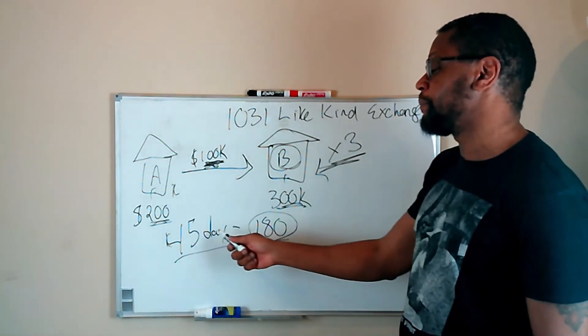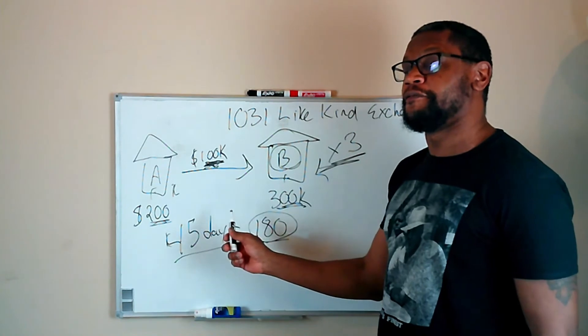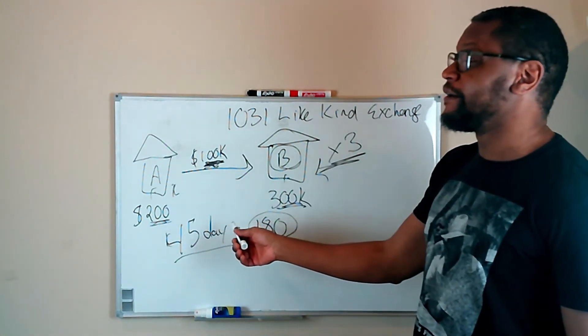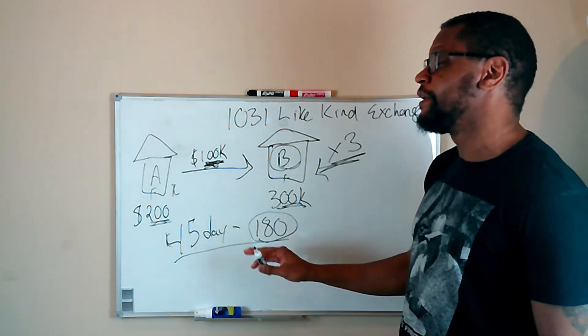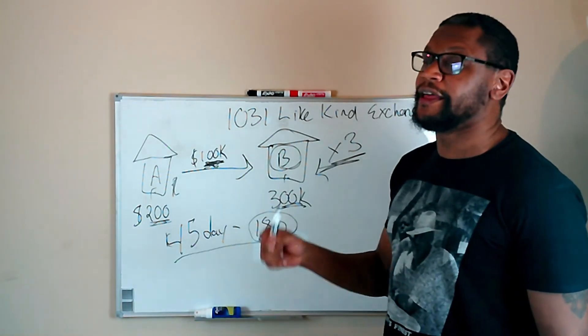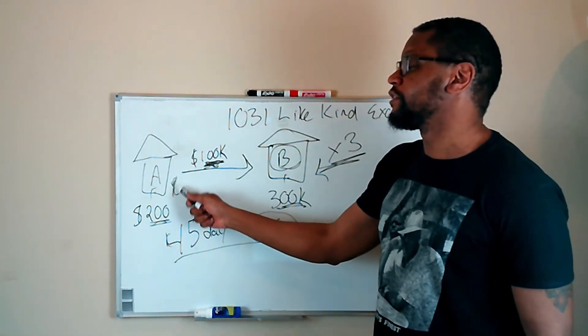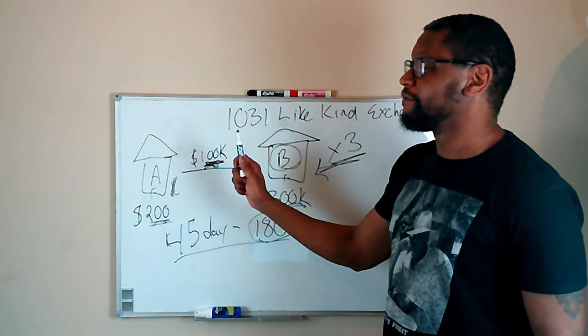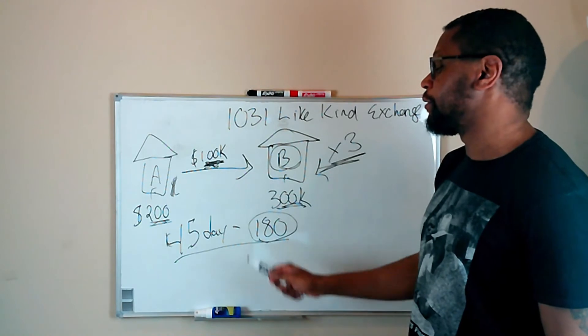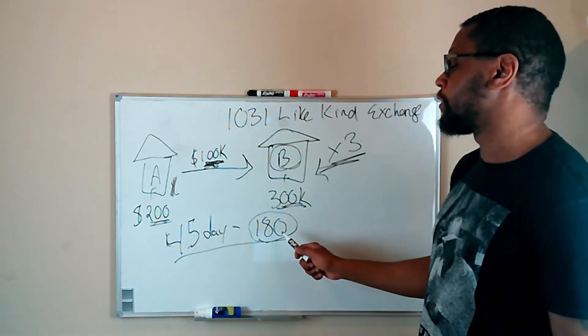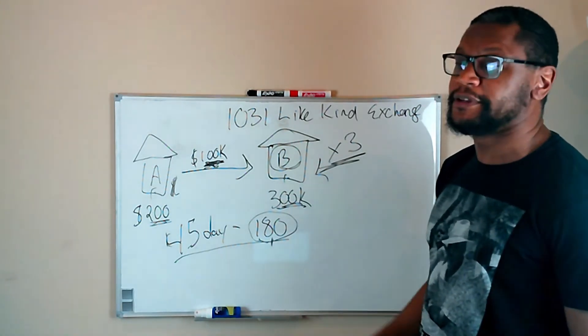So a lot of people fall victim to the error by confusing these timeframes and the dates and so forth. But both of these dates start at the close of the sale of your initial investment property. And hey, at that closing date, the 45 day clock starts to tick and the 180 day clock with regard to actually closing on the property starts to tick.